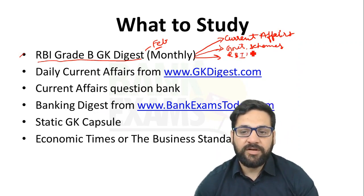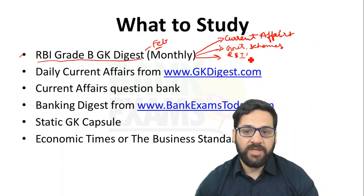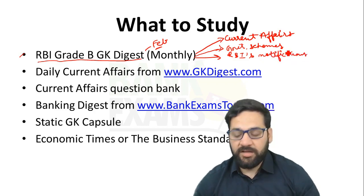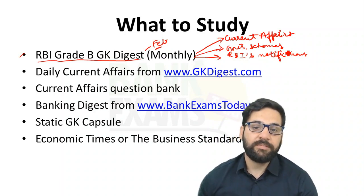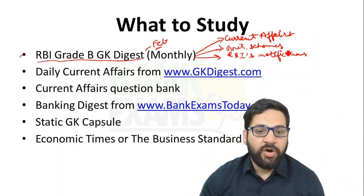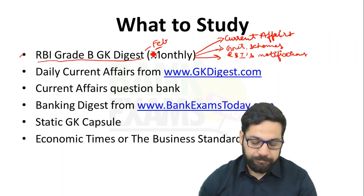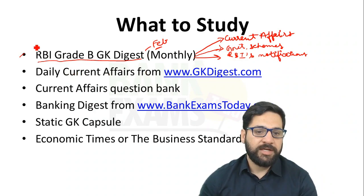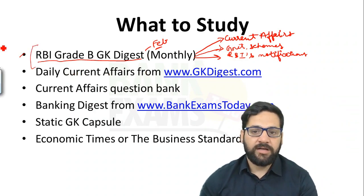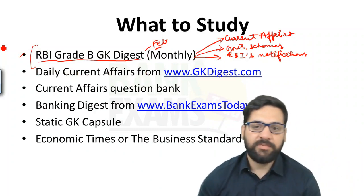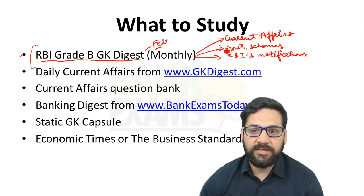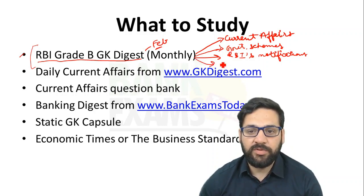RBI notifications and government schemes are very important for Phase 2 ESI. These RBI notifications are also very important for Phase 1. If you have started your preparation for Phase 1, you should study the complete RBI Grade B GK Digest, so that after the Phase 1 exam it will be very easy for you to prepare for Phase 2. So RBI notifications, government schemes, current affairs, and a summary of Yojana magazine are all included.